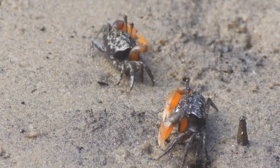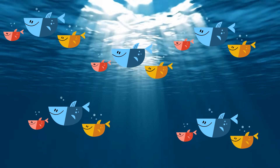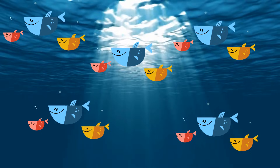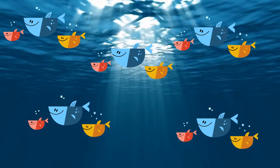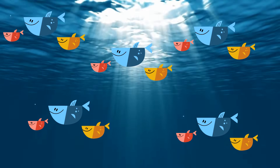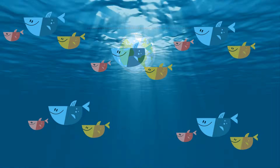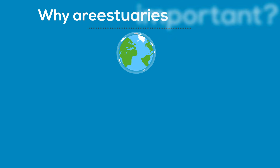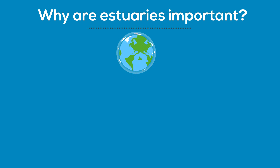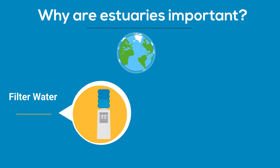In addition, they are a safe environment for fish, birds, and other wildlife to raise their young. Estuaries also help because they filter sediment and pollutants from the water before it flows into the ocean.